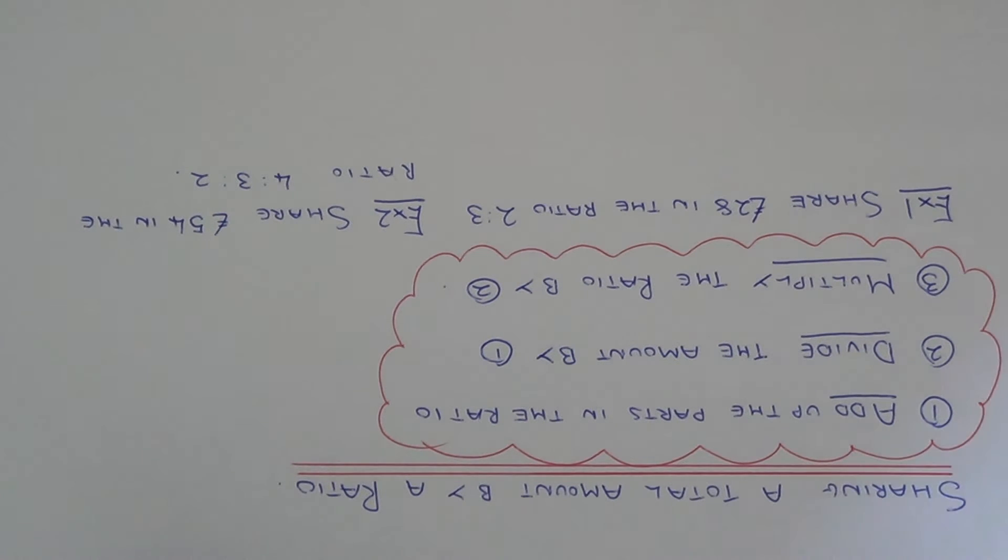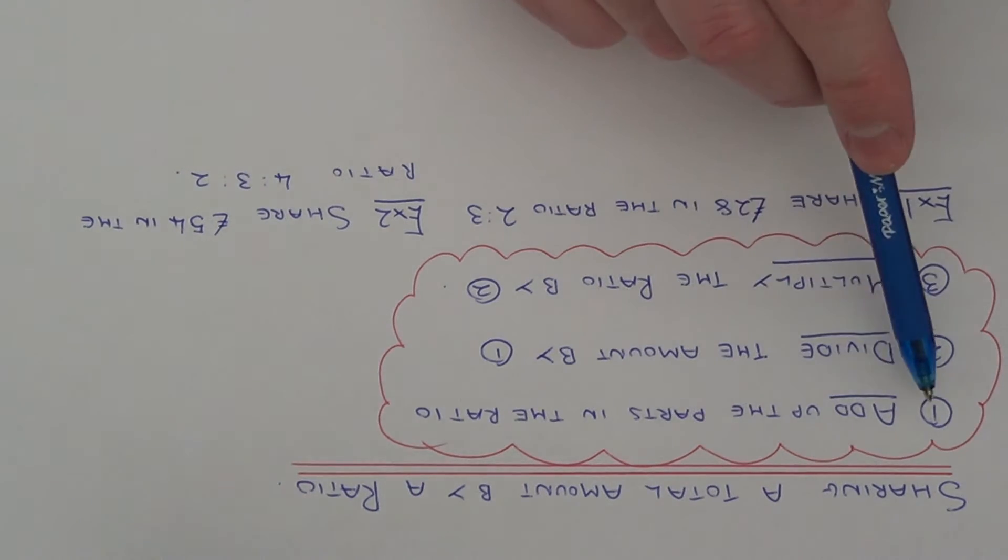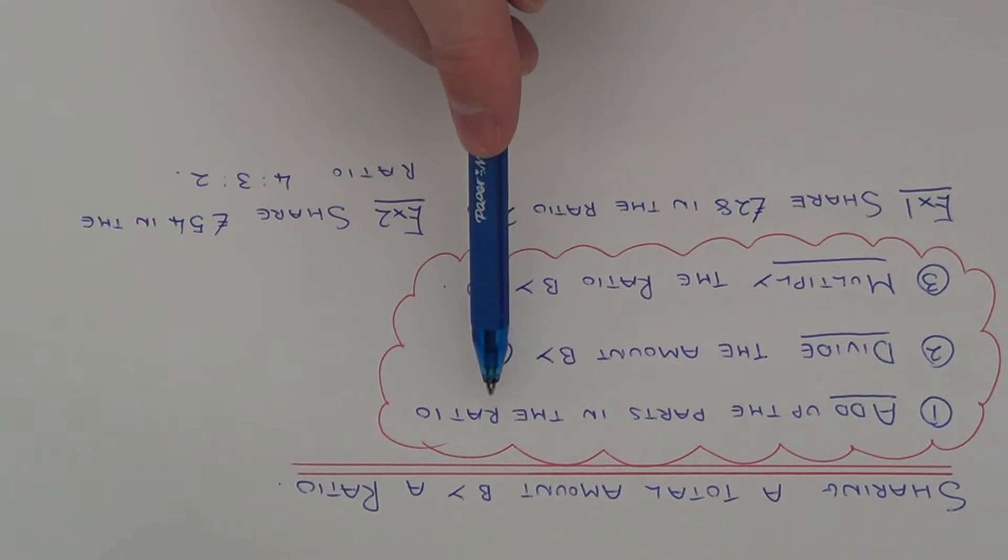Today I'm going to show you how to share a total amount by a ratio. There's three steps basically you need to follow. The first step you need to add up the parts in the ratio.